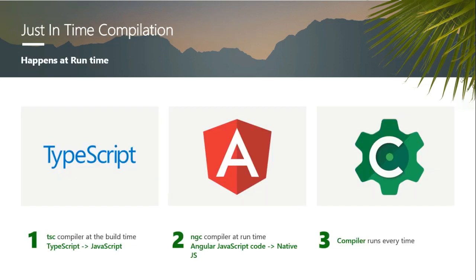Let me explain the process of just-in-time compilation. We have very few processes happening here. First, the TypeScript compiler compiles the TypeScript code and transfers it into JavaScript code — and when I say JavaScript code here, I mean Angular-flavored JavaScript. It may contain component or directive kind of JavaScript code. What we then do is ship this code to the browser, along with the Angular compiler.